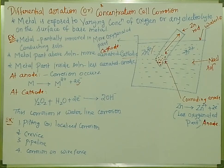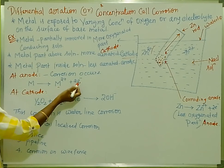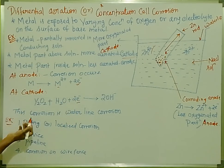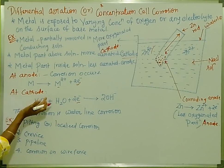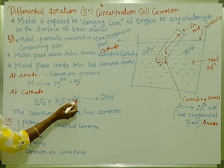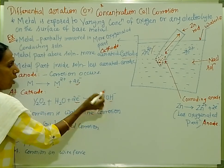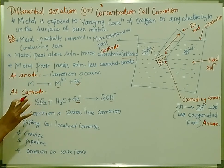This part is the cathode. Cathode means reduction, which is the addition of electrons. At the cathode, hydroxide ions are produced: O₂ + H₂O + electrons → OH⁻ (hydroxide ions produced). This is the cathodic reaction.